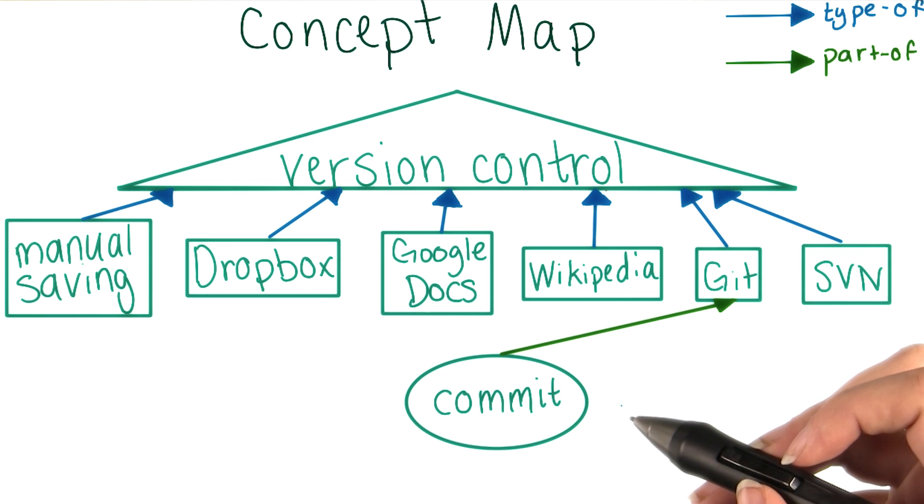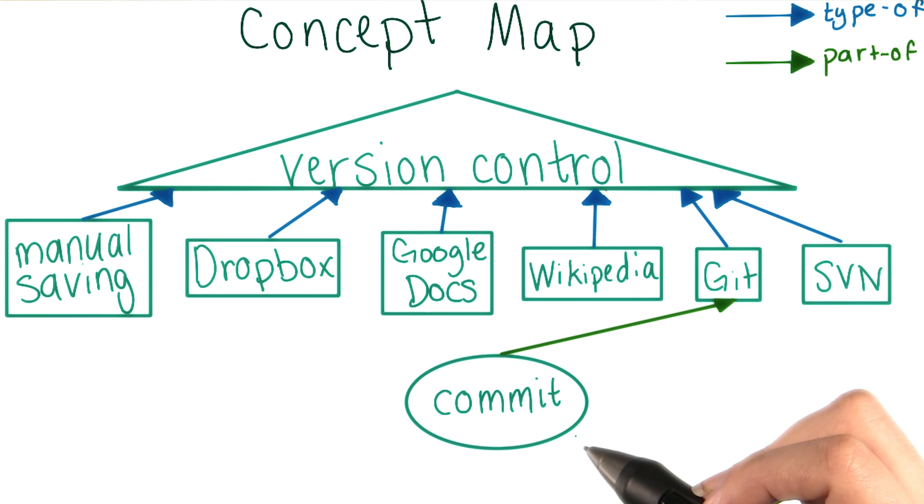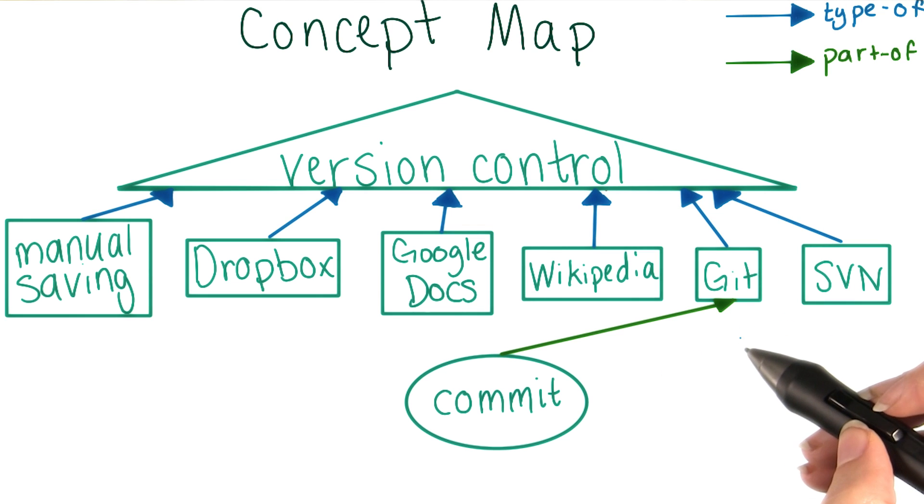Now this time, I walked you through the process of adding items to the concept map to give you an idea of what we're doing with it. Later on, you'll be asked to decide how new items fit in for yourself. Now let's go to Caroline to find out how to view previous commits in git.